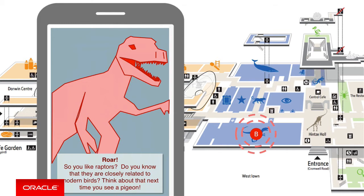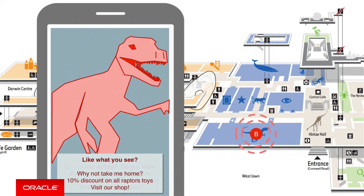This means the museum can remove many of the old signs and replace them with modern digital experiences, utilizing the visitor's very powerful owned mobile devices. And we can even take this a step further, and ask our visitors if they like raptors, because they've been looking at that display for a while, would they like a 10% discount on all raptor toys when they visit the museum's shop?